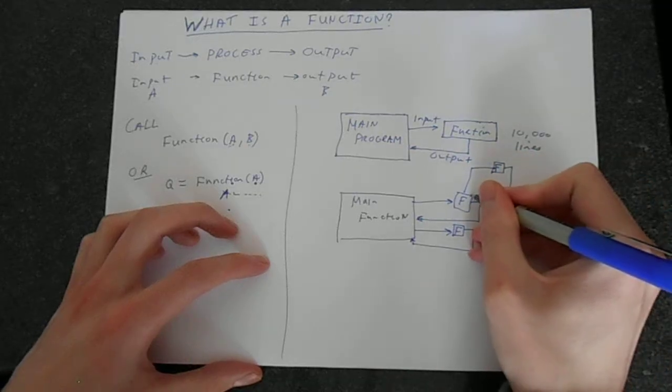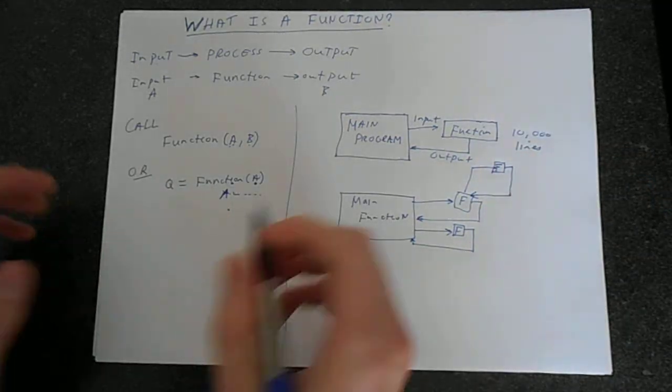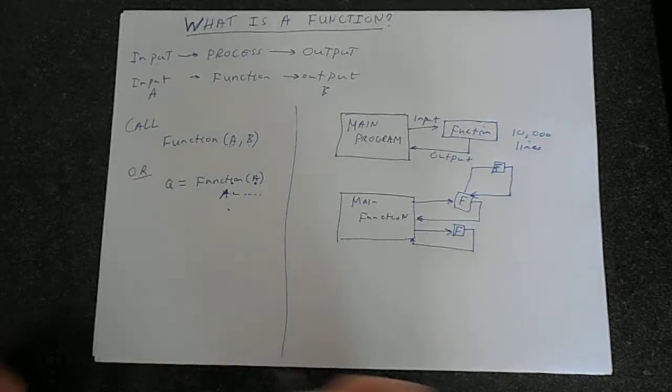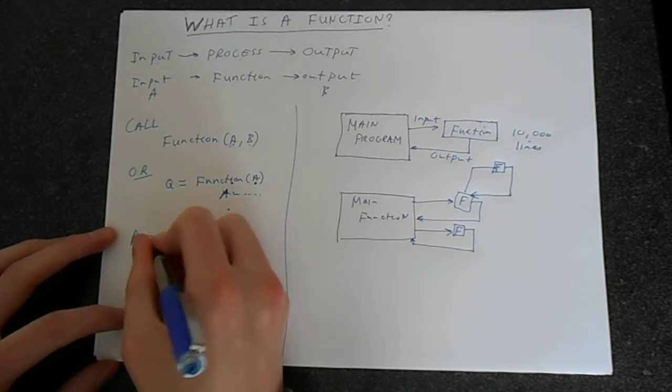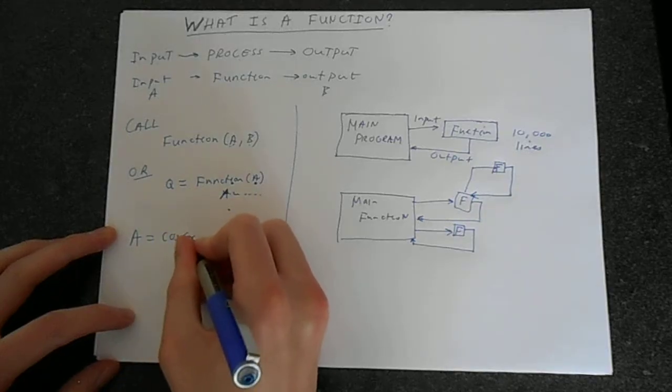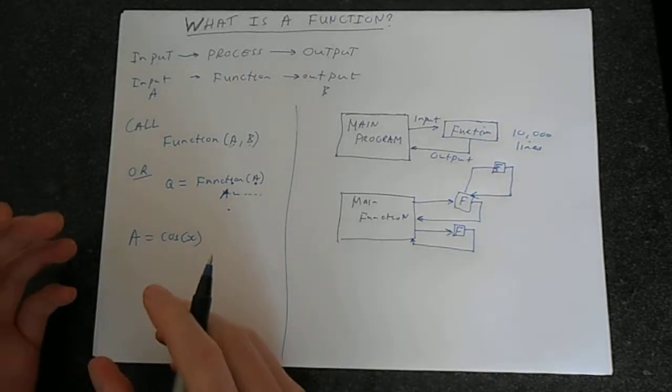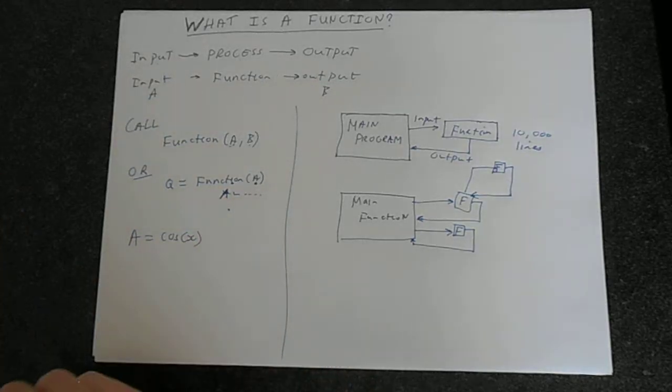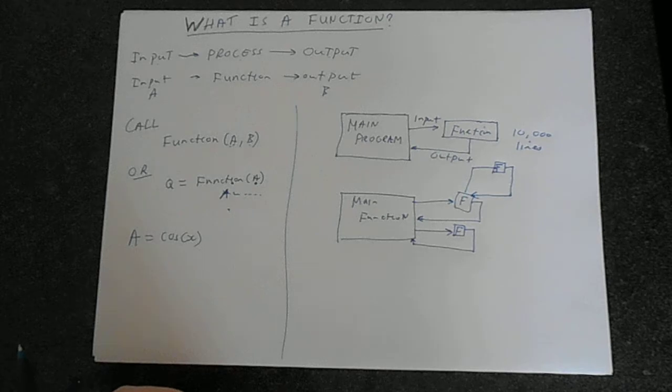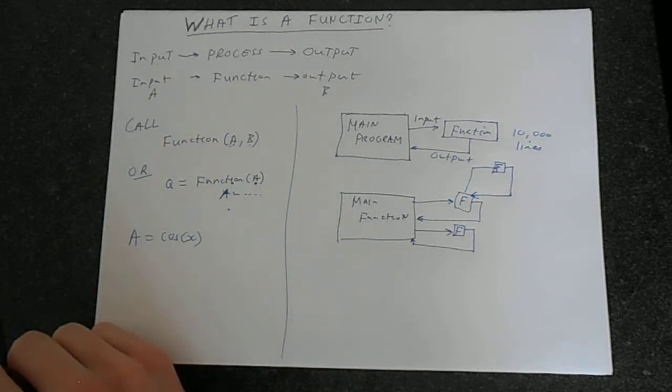For example, a good example of a function is a equals cos(x). That is a function. Usually it's built into a programming language so you don't have to write it. But how do you actually get a computer to find the cosine? You have to be moving around all of the bits. Computers think in binary.